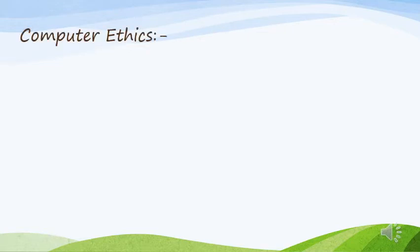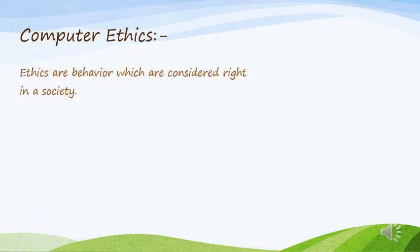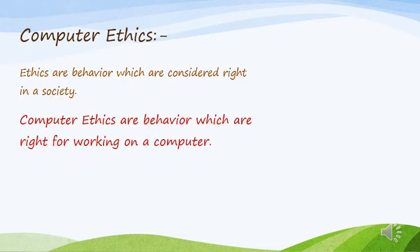Now let's start with computer ethics. What is computer ethics? It is made up of two words: computer and ethics. Ethics, children, are the behaviors which are considered to be right in a society. For example, the way we talk, the way we walk — we cannot shout on the roads, we should not run in the corridors. These are all part of ethical behavior.